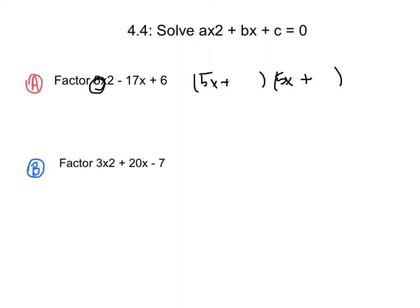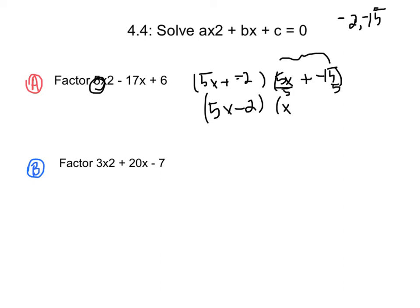Two multiples of 30 that work are negative 2 and negative 15 — they multiply to 30 and add to negative 17. So we get 5x minus 2 and 5x minus 15. We can simplify 5x minus 15 by dividing both terms by 5, leaving x minus 3. Our final answer is 5x minus 2 times x minus 3.